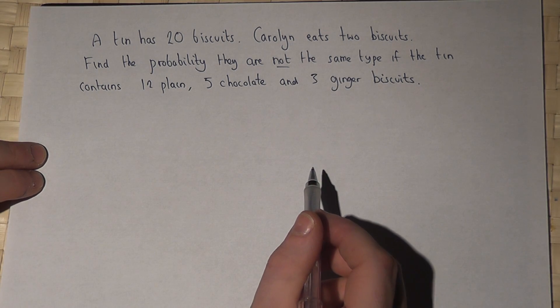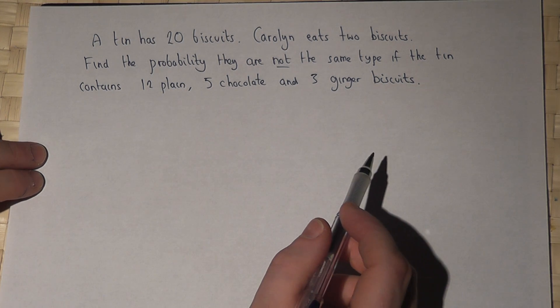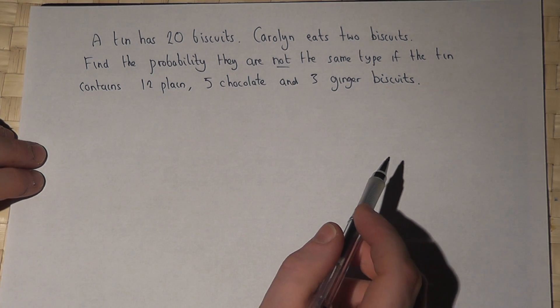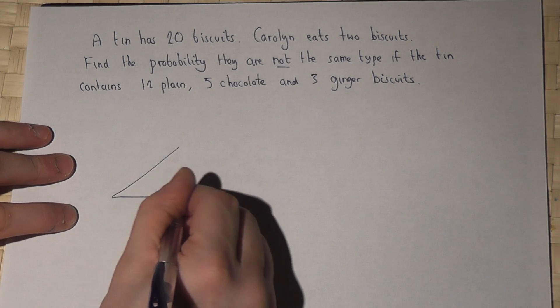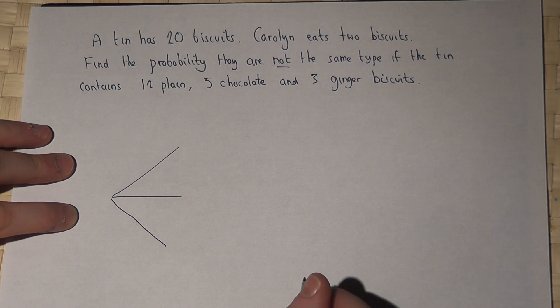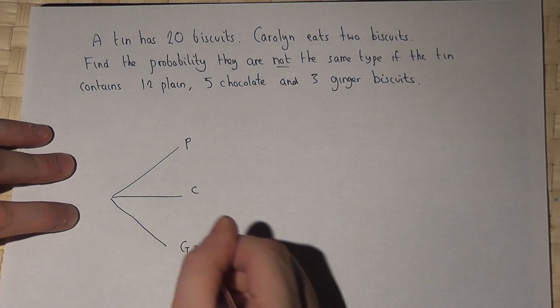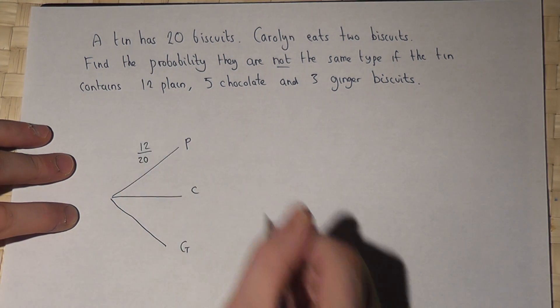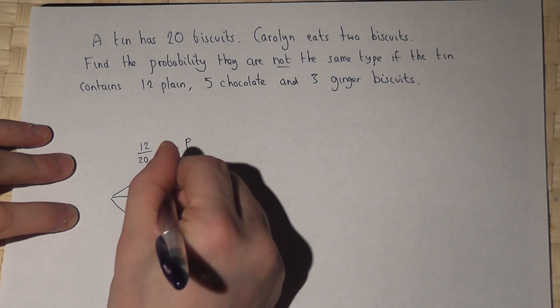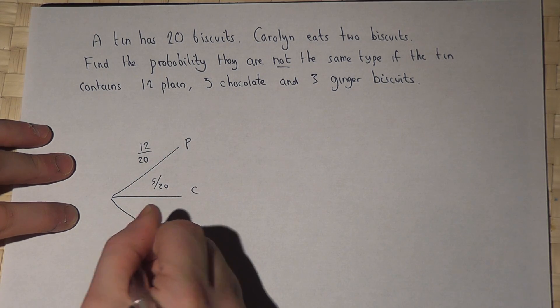Now there's lots of ways to solve this, but one of the simplest ways if unsure is to use a tree diagram. When she first takes a biscuit from the tin, it's either plain, chocolate, or ginger. Plain is 12 out of 20, chocolate is 5 out of 20, and ginger is 3 out of 20.